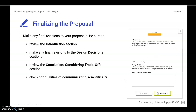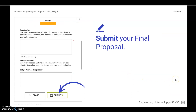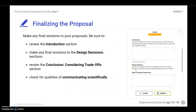Finalizing the proposal in Activity D. We're going to make any final revisions to your proposal. Make sure you review the introduction section, make any revisions you want in the design decisions section, review the conclusion considering your tradeoff section, and check for qualities of communicating scientifically — are you speaking in an appropriate tone and language, and making sure that you are writing in a way that speaks to a professional? Pause the video here, go ahead and review your sections — introduction, design decisions, conclusion, et cetera — and make sure you're ready to submit.